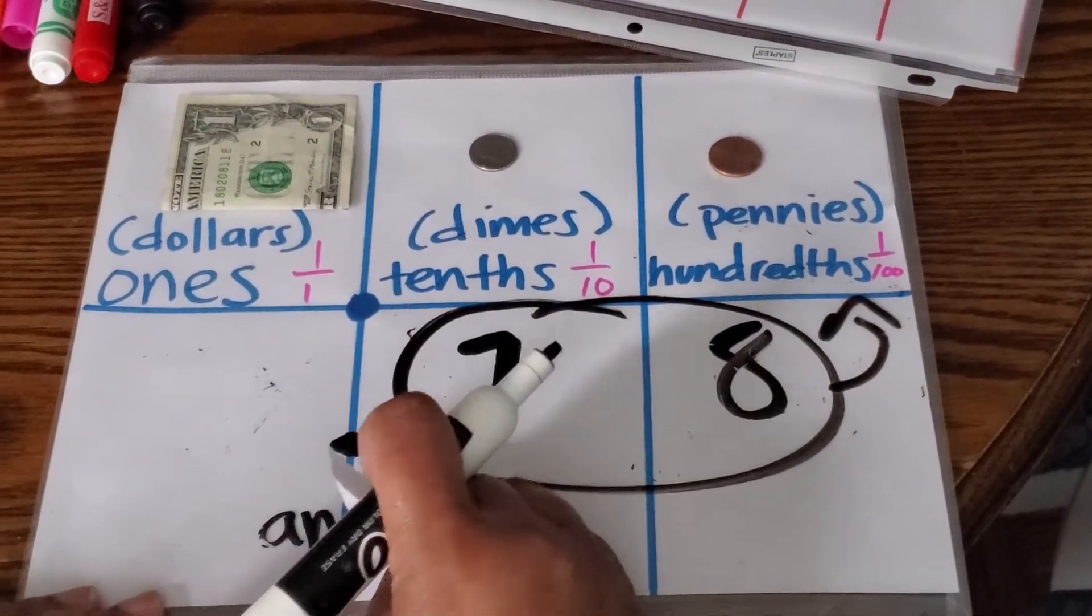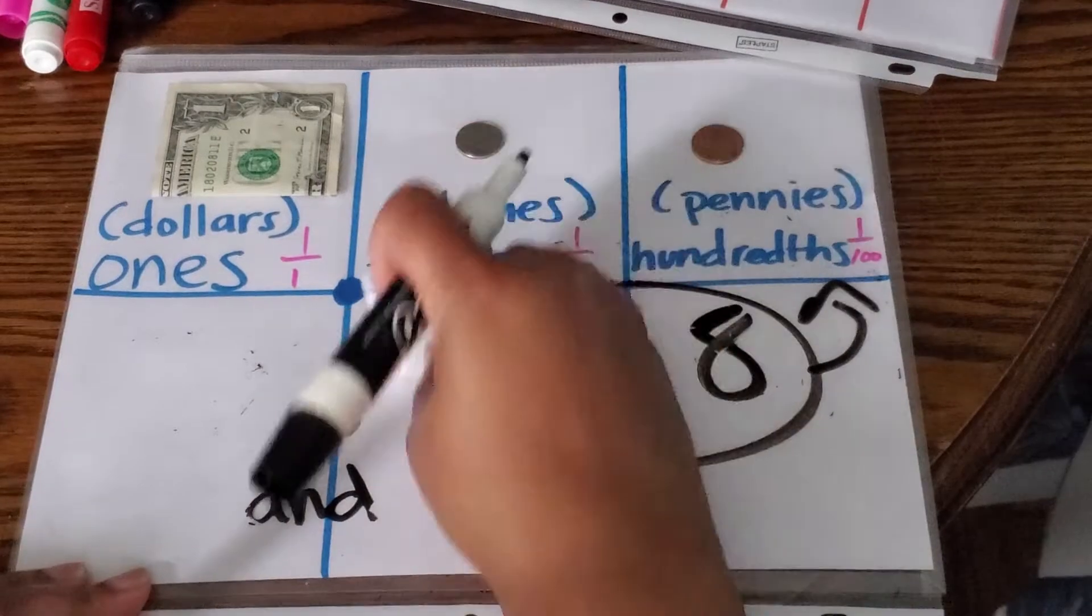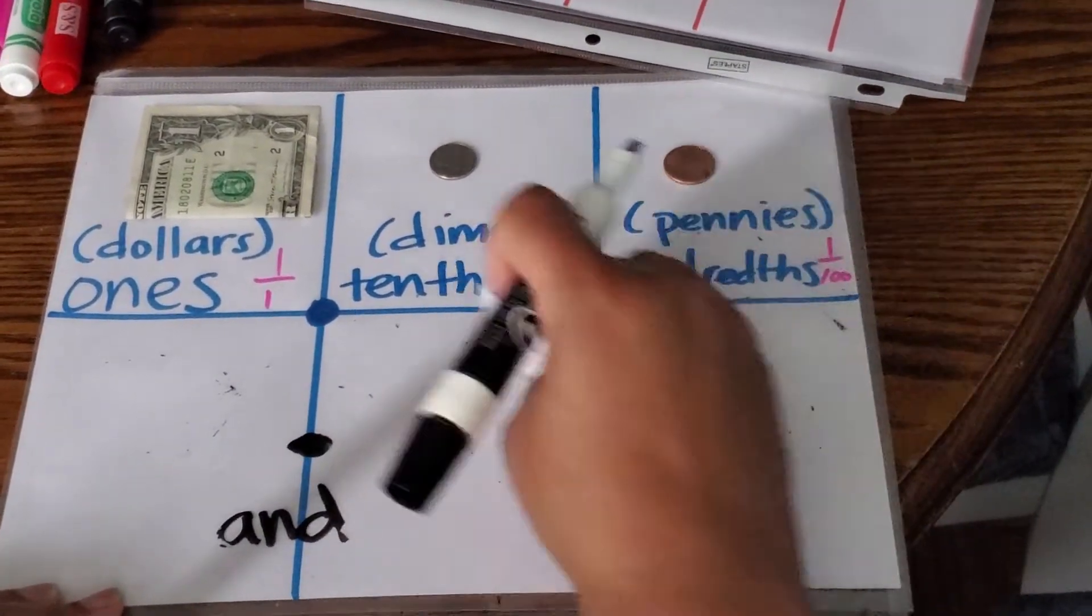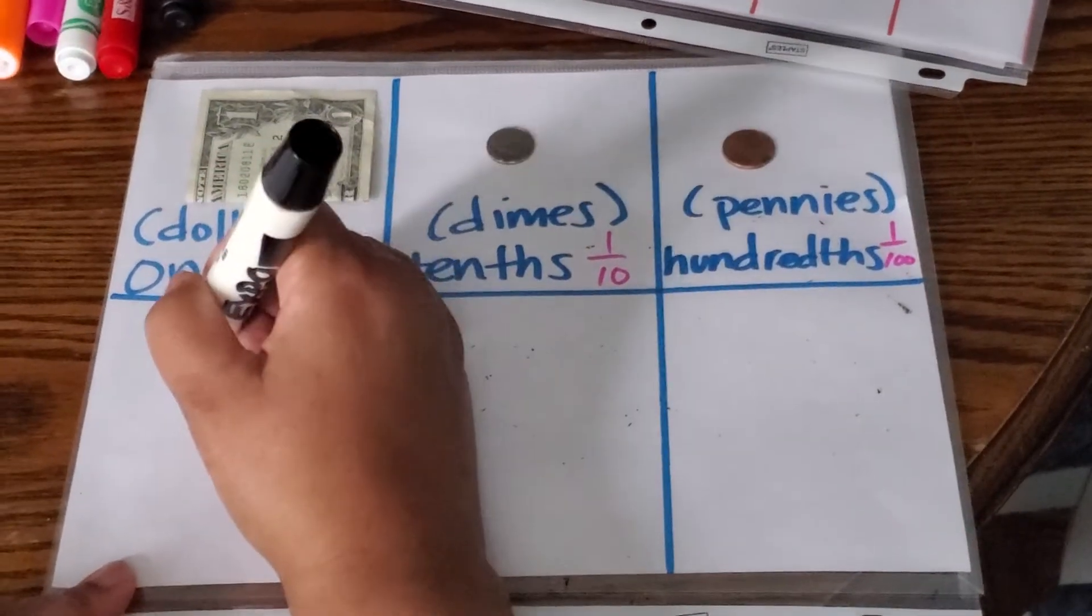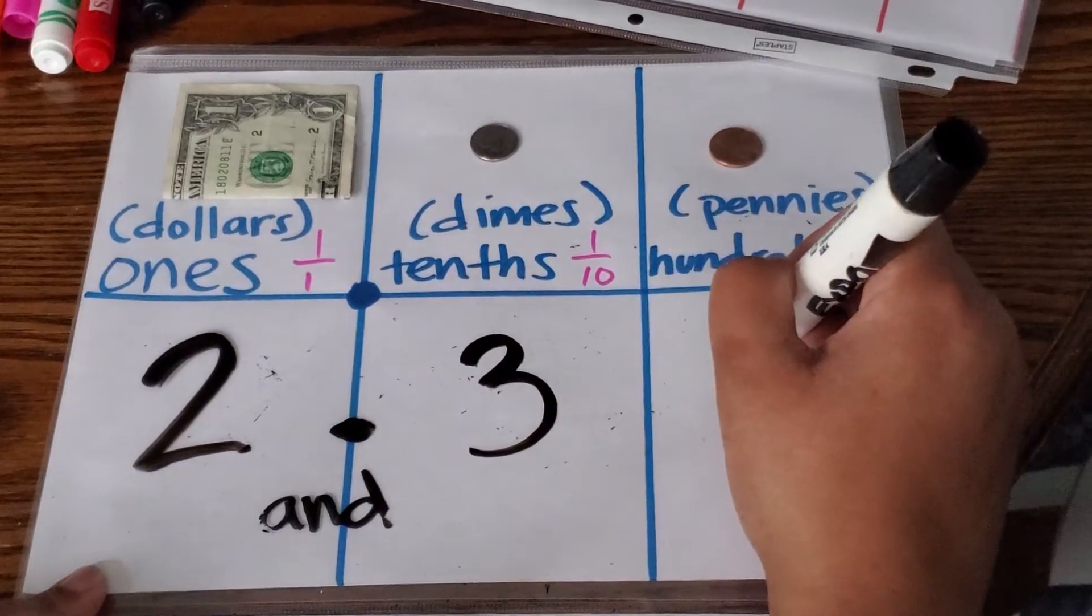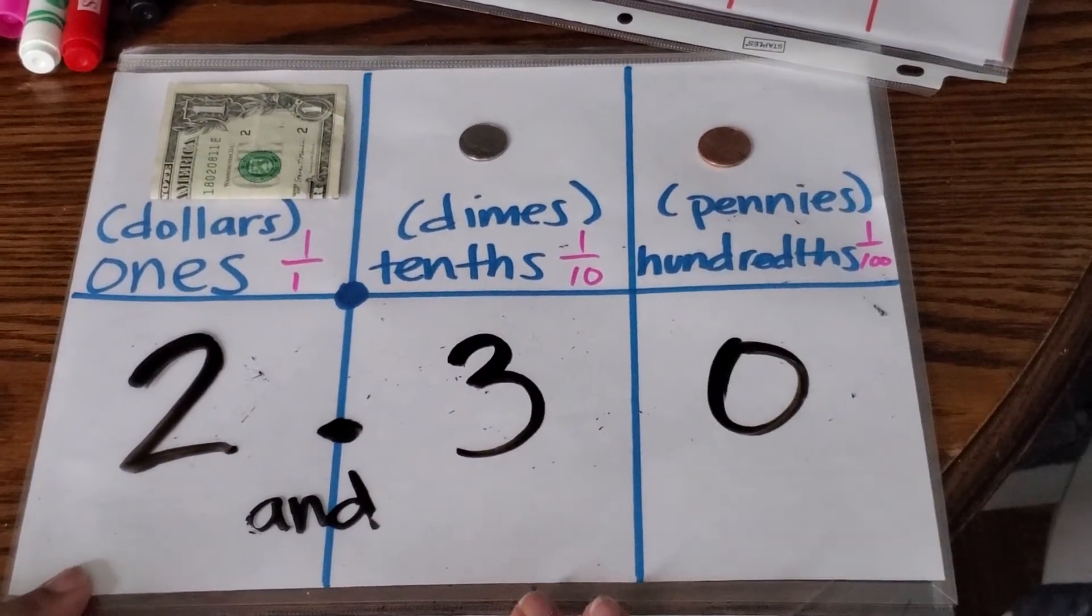We're going to practice that a little bit today, too, because that's going to be important for next week. Sort of like word form that we did early last year with place value. Let's say you have two.